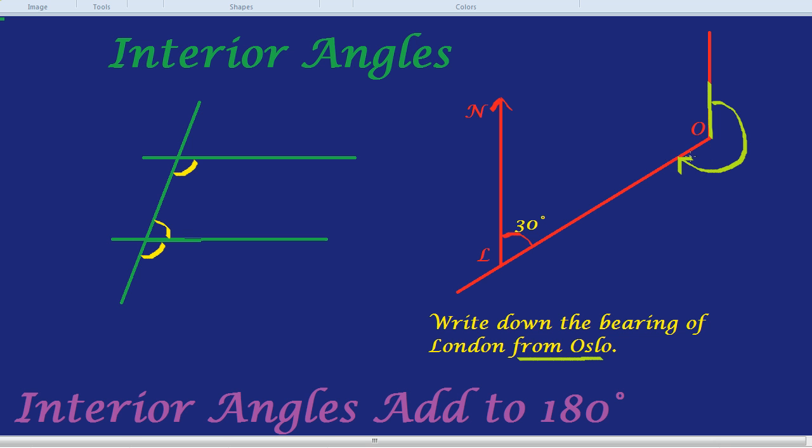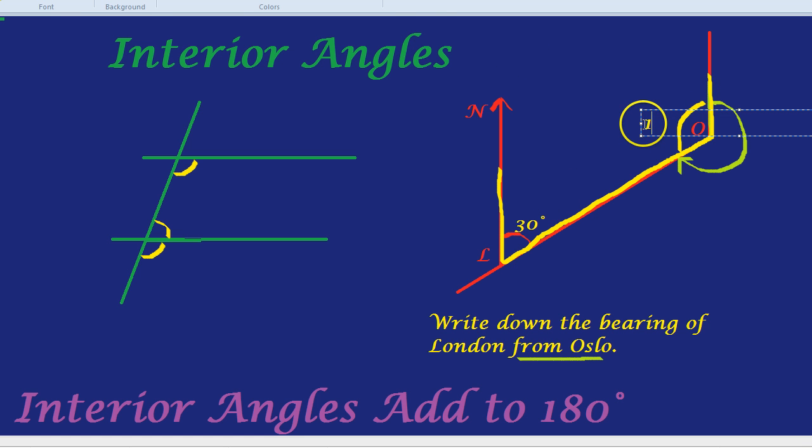Here's where the interior angle comes in. If this angle is 30, can you spot a C that might help us out? Here is a C on its back. And what do we know about interior angles? They add up to 180. So if the angle given is 30, can you think what this angle would be? It would be 150 degrees.